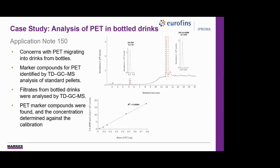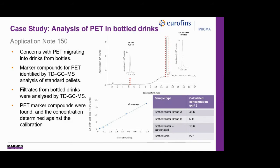Filtrates from a variety of bottled drinks were verified to contain microplastics by examination under a microscope, and then analysed by TD-GCMS for confirmation. PET marker compounds were found, and the concentration of a bottled water sample was determined against the calibration to be 46 micrograms per litre, providing a value for comparison to others in future.